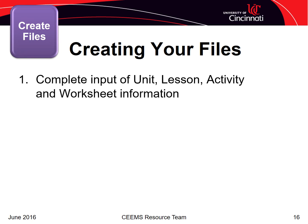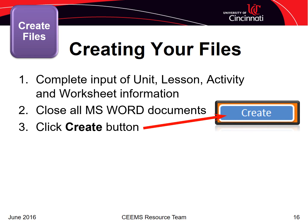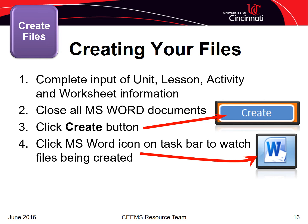Once you've input the unit, lesson, activity, and worksheet information, you're ready to generate your unit files. It is important that you close all Word documents prior to initiating this step, as open Word documents may block the unit file generator from running. Remember to save your work before closing any Word documents. On the Activities and Worksheets tab, make sure the files are sorted in order by clicking the sort button. Verify the files are in the correct order and that you have included all the files you would like to generate, then click the Create button. When the file generator begins creating your files, the Word icon will appear on the taskbar at the bottom of the screen, and you can click on it to watch as the files are generated.